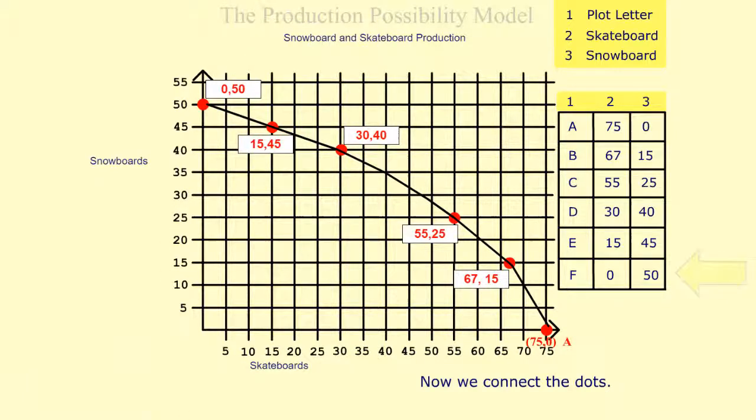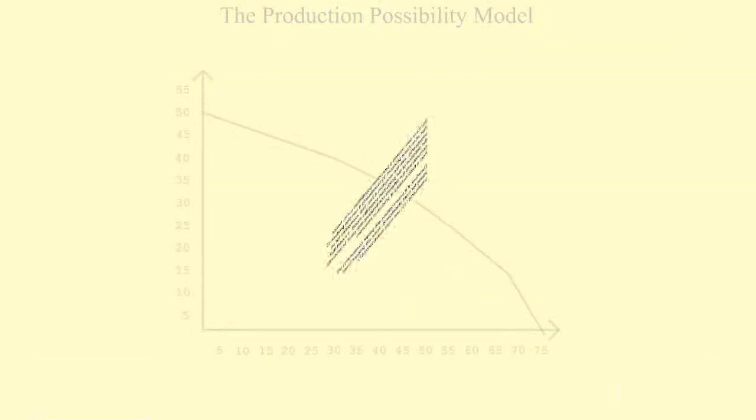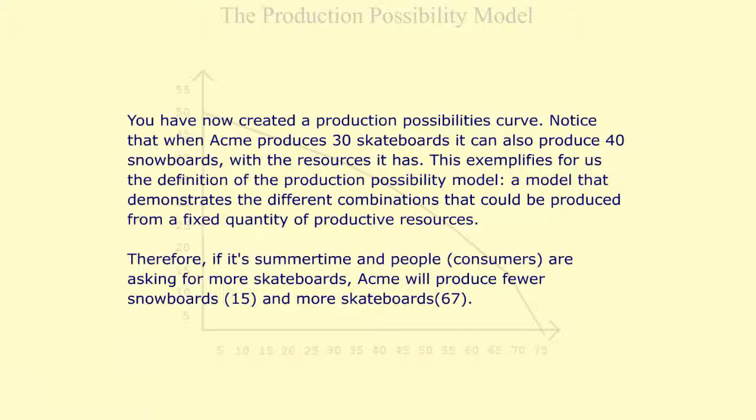Now using the coordinates we have plotted on the graph, we connect the dots. You have now created a production possibilities curve. Notice that when Acme produces 30 skateboards, it can also produce 40 snowboards with the resources it has. This exemplifies for us the definition of the production possibility model, a model that demonstrates the different combinations that could be produced from a fixed quantity of productive resources.